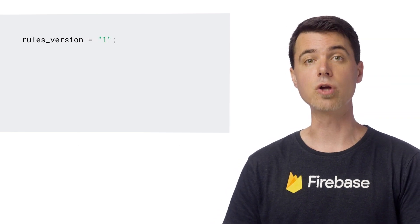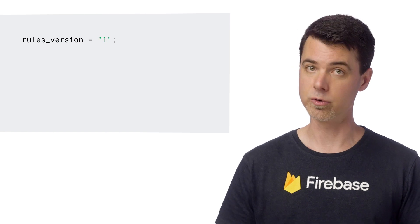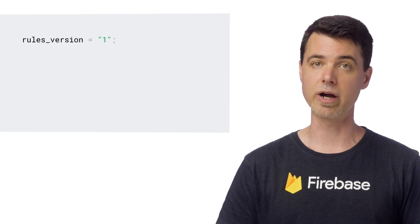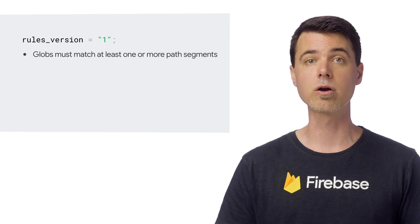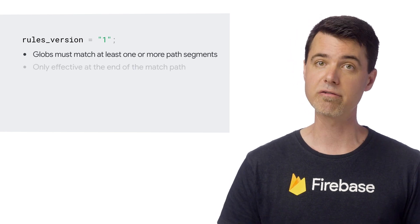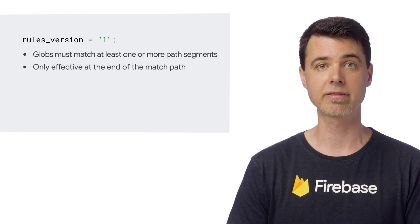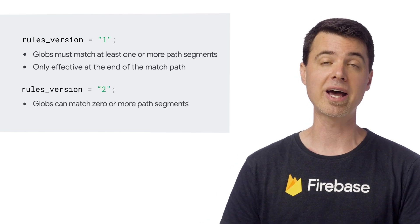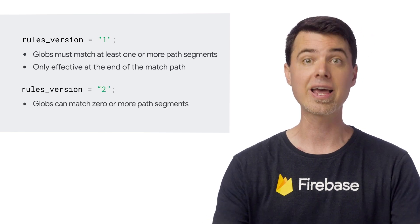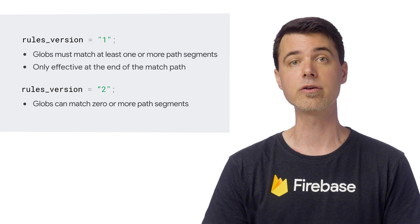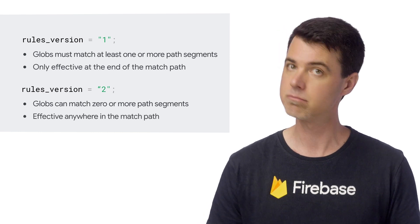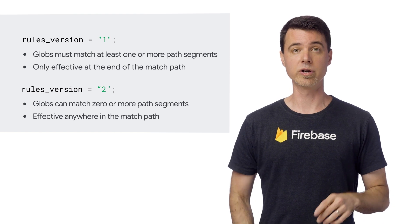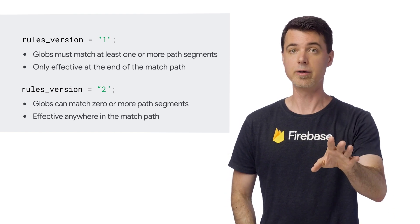By default, if you don't specify a rules version, they will use version one behavior, which requires that globs must match one or more path segments, and they are only effective at the end of a match path. But if you change the rules to version two, globs will match zero or more path segments, and you can now use them at the beginning of a match. This change of behavior is to support the new collection group queries in Cloud Firestore, and I'll show you that in a bit.